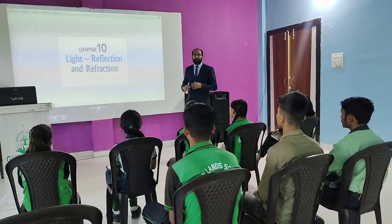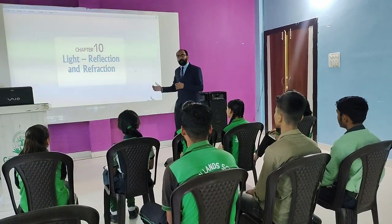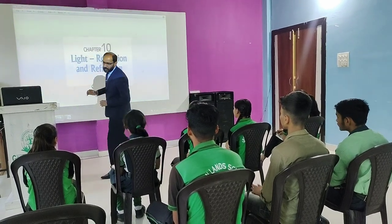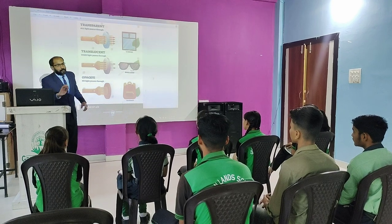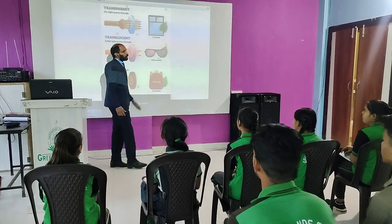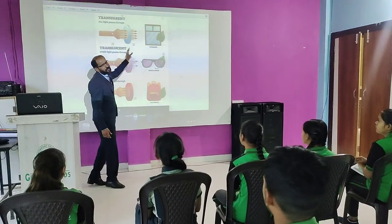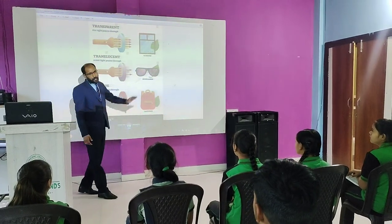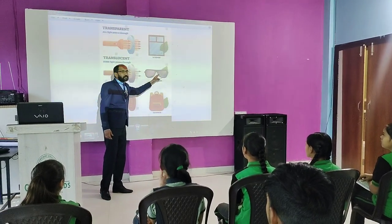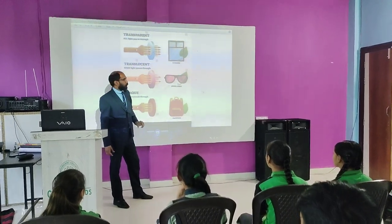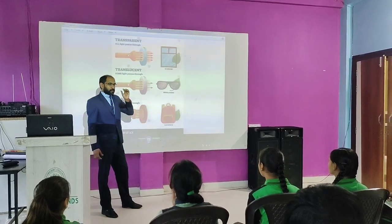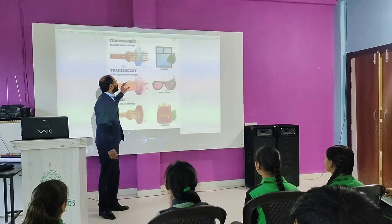The next word is translucent. Translucent means the light can partially pass through. Here you can see the leaf clearly behind the glass — all light can pass through, so it is transparent. But here, the leaf behind this is only partially visible — light is only a little bit passing through. So, it is translucent.